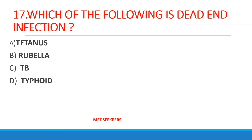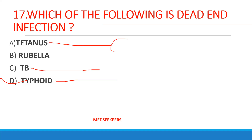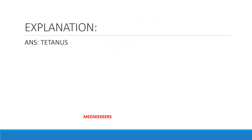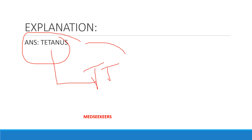Which of the following is a dead-end infection? Option A: tetanus; option B: rubeola; option C: tuberculosis; option D: typhoid. Also name the bacteria causing each: tetanus is caused by Clostridium tetani, TB by Mycobacterium tuberculosis, typhoid by Salmonella typhi. Tetanus is a dead-end infection — that is why we give tetanus toxoid (TT) to prevent it.